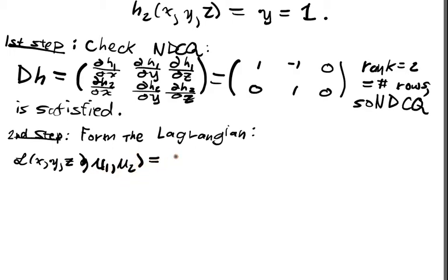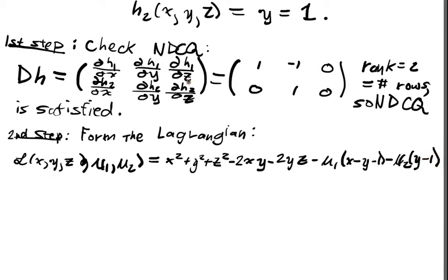when we multiply everything out, it'll be x squared plus y squared plus z squared minus 2xy minus mu1 times x minus y minus 1, minus mu2 times y minus 1. That's our full Lagrangian.